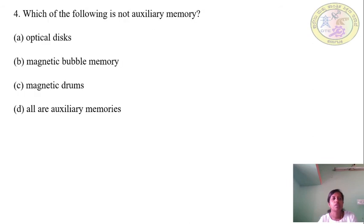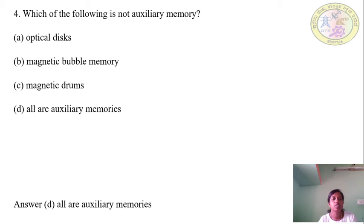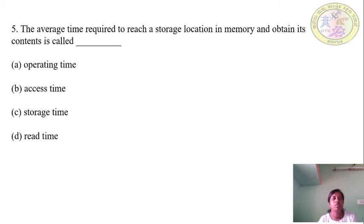Question 4: Which of the following is not auxiliary memory? Options: optical disk, magnetic bubble memory, magnetic drum, all are auxiliary memories. Answer: D — All are auxiliary memories. Question 5: The average time required to reach a storage location in memory and obtain its contents is called — Answer: B — Access time.